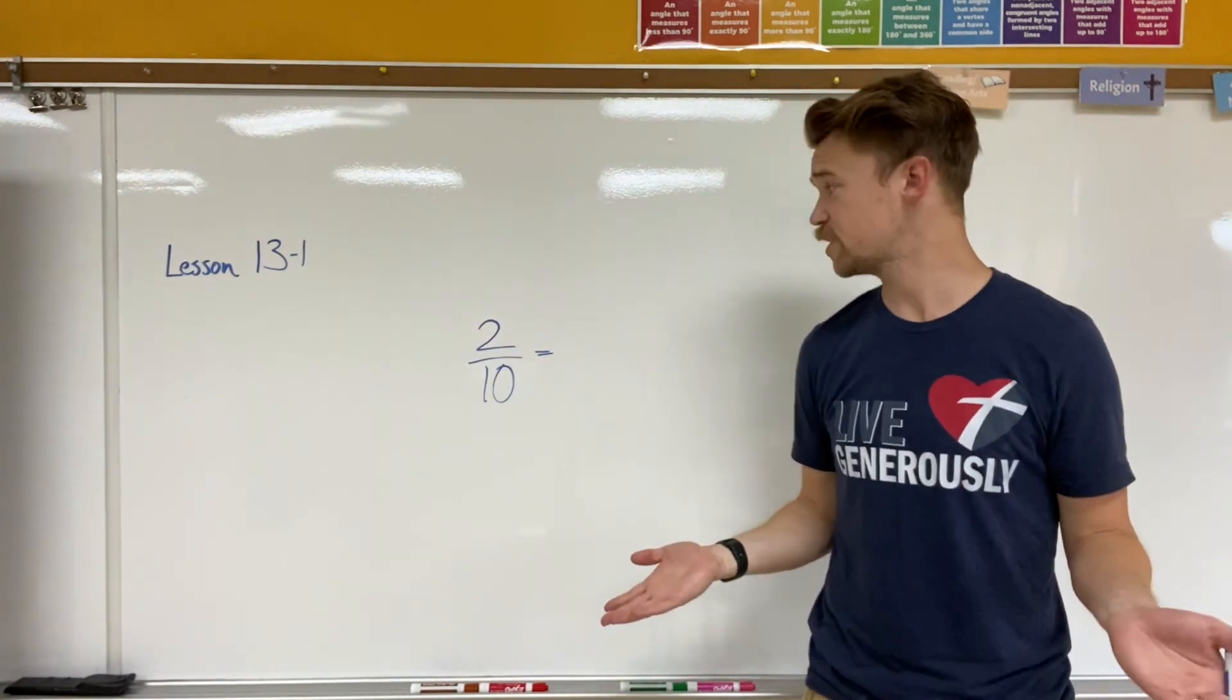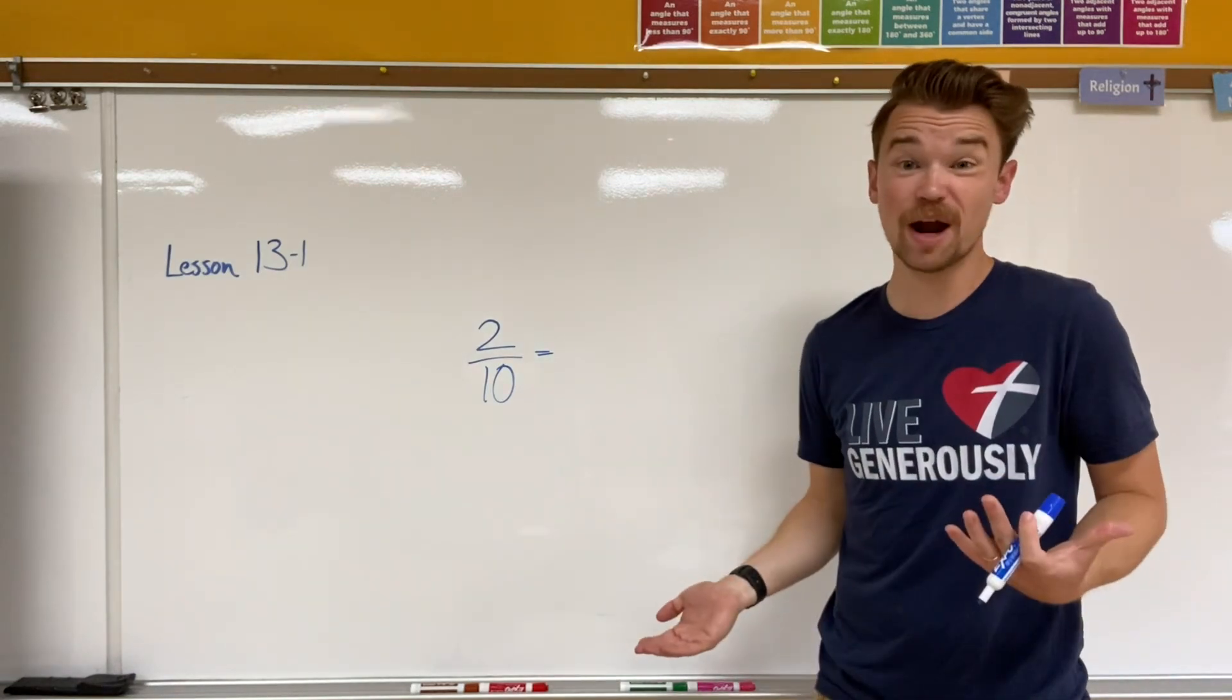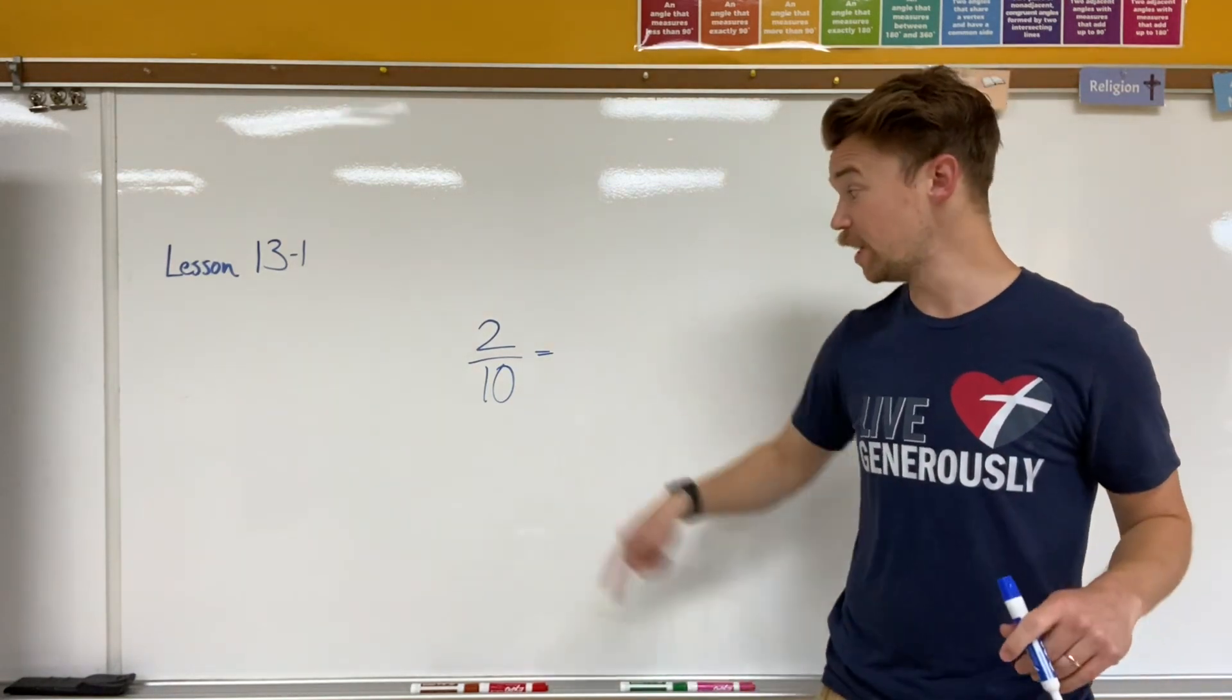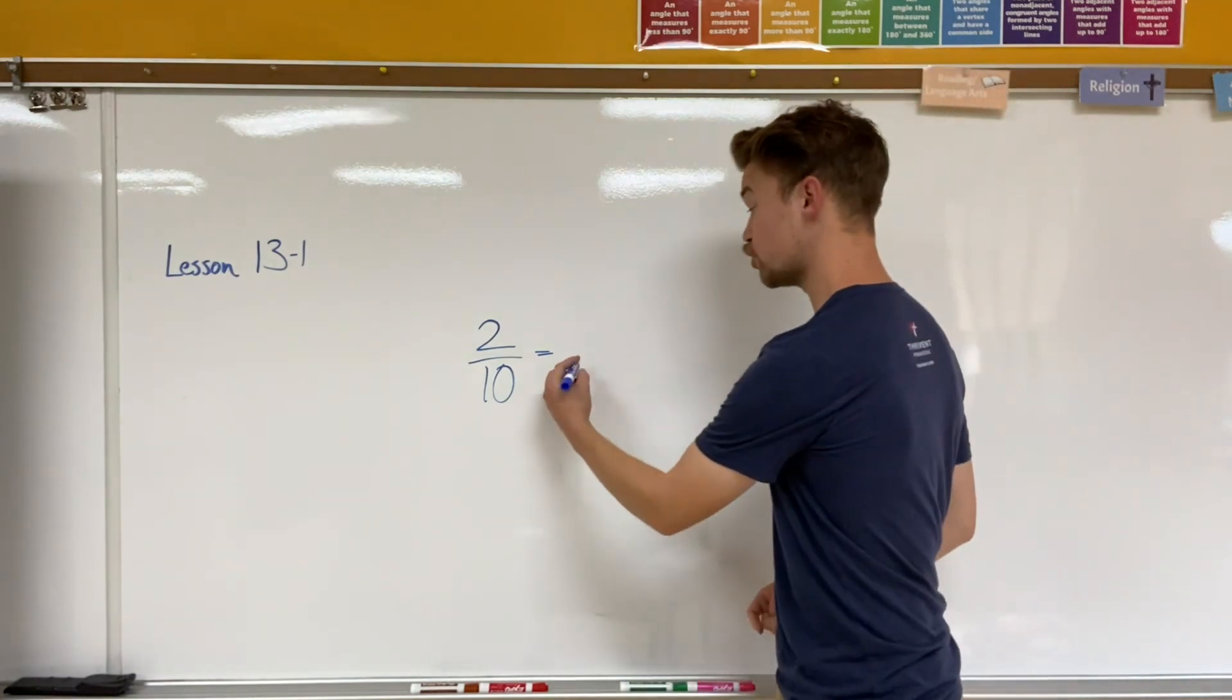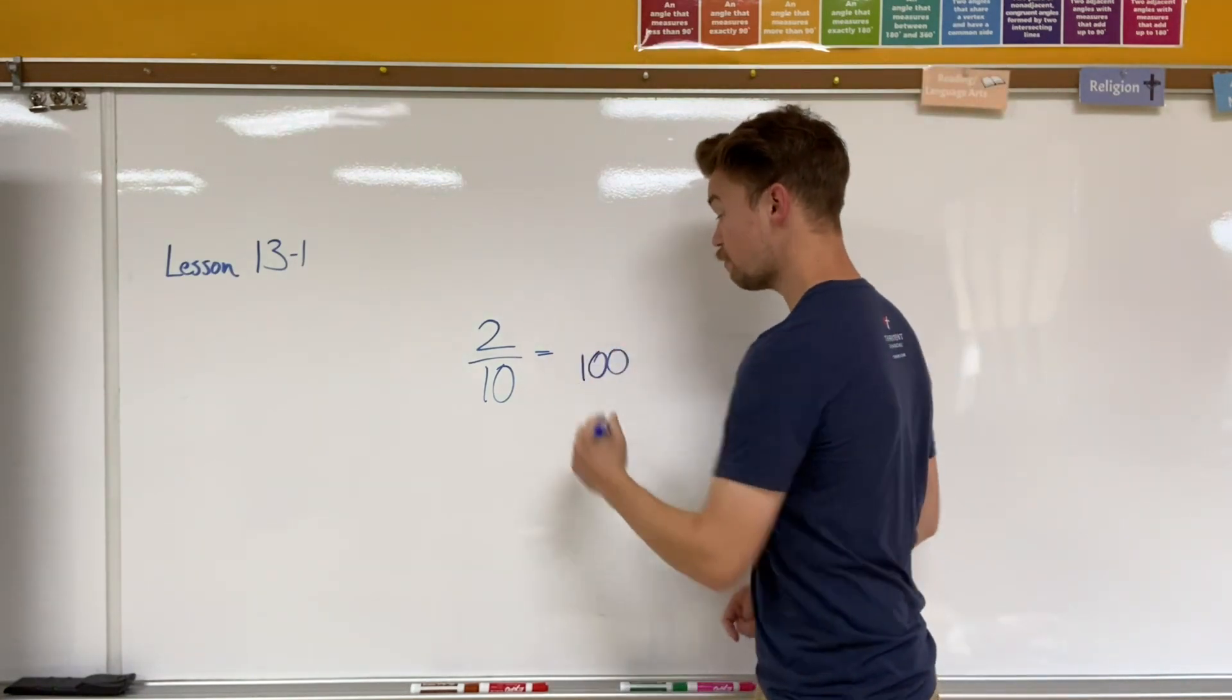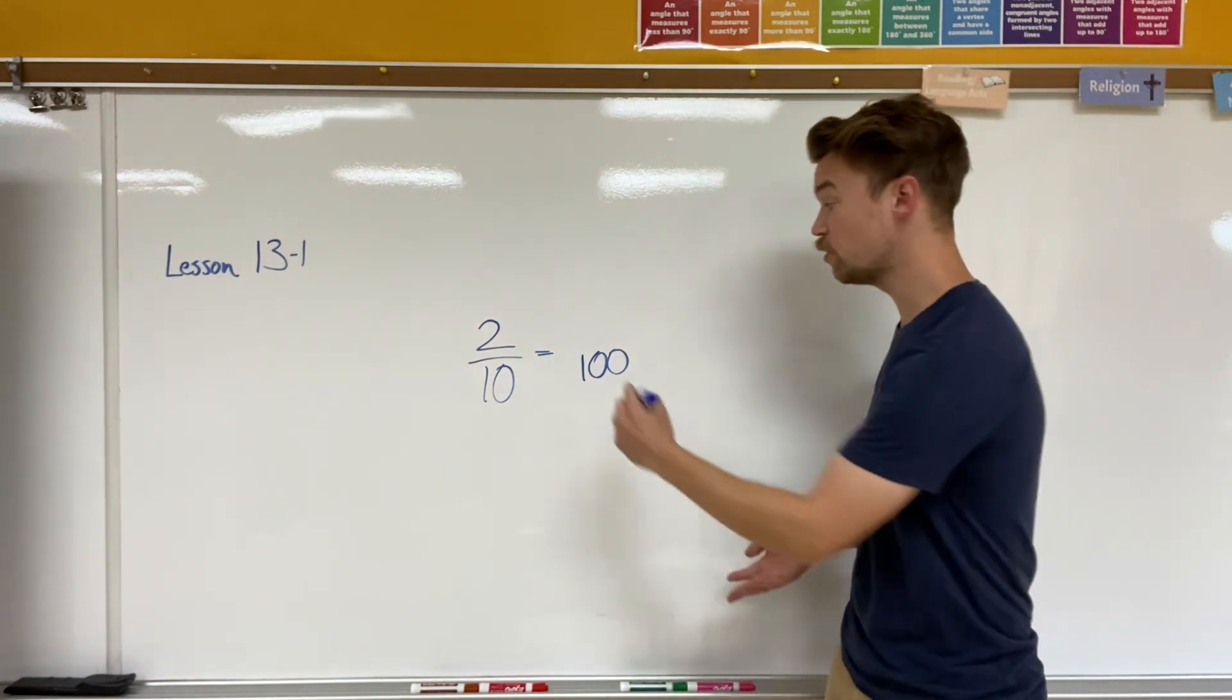Now what if my directions give me a fraction that looks like this, and they want me to write it in hundredths? Well right now it's in tenths, because my denominator is ten. I'm trying to get it to hundredths. So I know that my denominator for my equivalent fraction has to be one hundred.